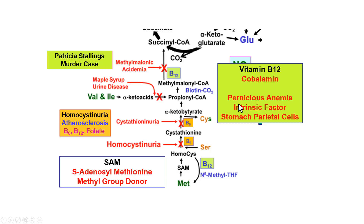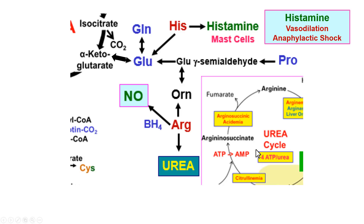Vitamin B12 (cobalamin) is used in only those two reactions in the body. Intrinsic factor is made by the parietal cells of the stomach; without adequate intrinsic factor, you get pernicious anemia because B12 can't be absorbed into the blood. People who take a lot of antacids often wind up with B12 deficiency because antacids impair parietal cell function. Histidine is converted into histamine in mast cells. Mast cells store large amounts of histamine and have IgE receptors on their surface. In allergic reactions, IgE causes mast cells to degranulate and release histamine. For example, IgE against peanut proteins can trigger anaphylactic shock from massive vasodilation, which can be fatal — making mast cells the only cell type that can kill us.